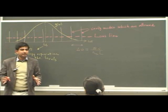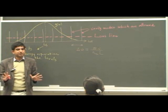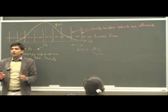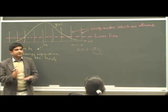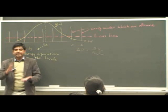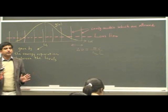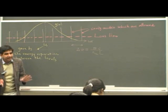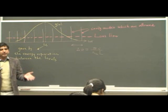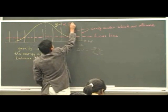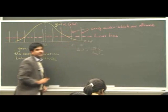The gain has to be proportional to the gain function. Because in a laser transition, only certain frequencies can be amplified. So the small g(omega) is proportional to the gain function as well.